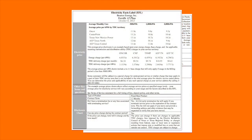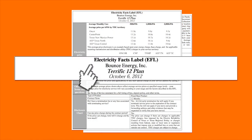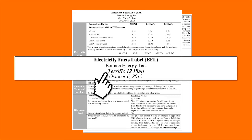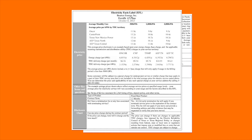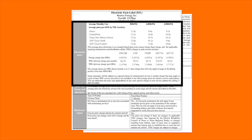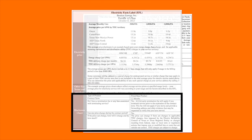Bounce Energy's EFLs are drawn up in a clear, consistent format. The top of the EFL shows the name of our company, the name of the plan, and the date the EFL went into effect. The rest of the information is grouped into four areas: electricity price, other key terms and questions, disclosure chart, and company information.